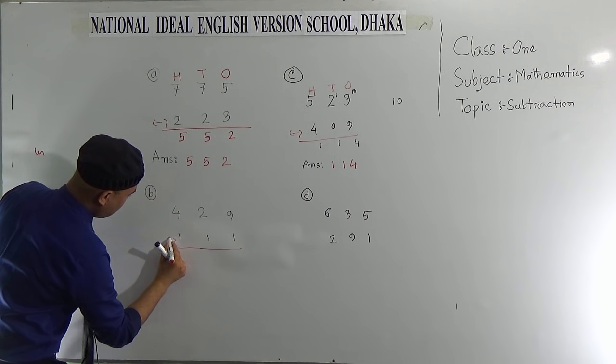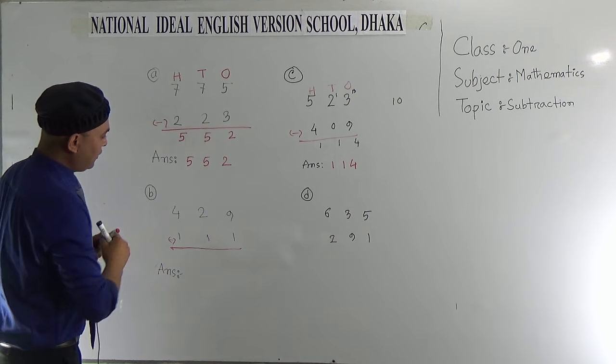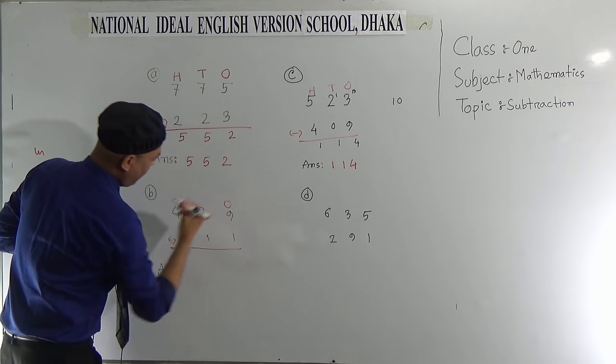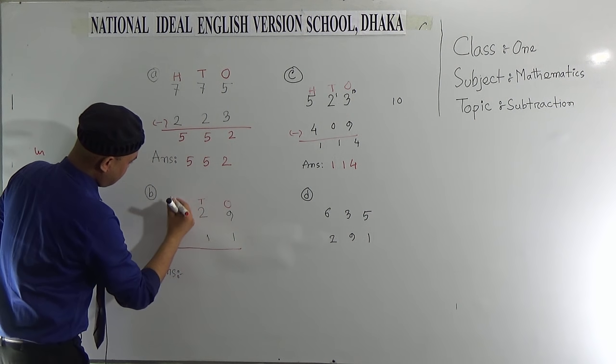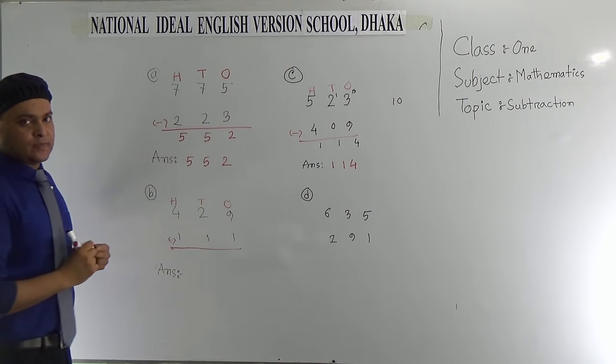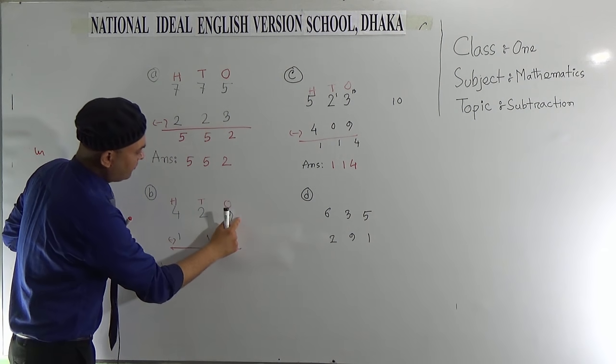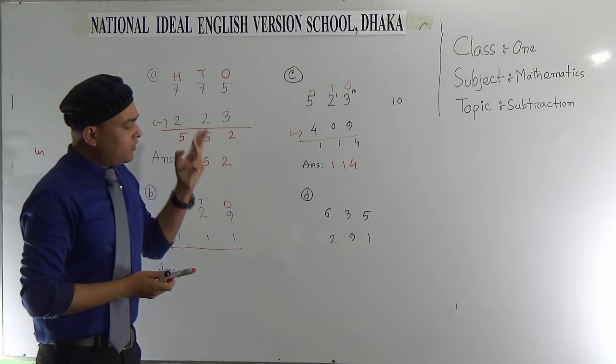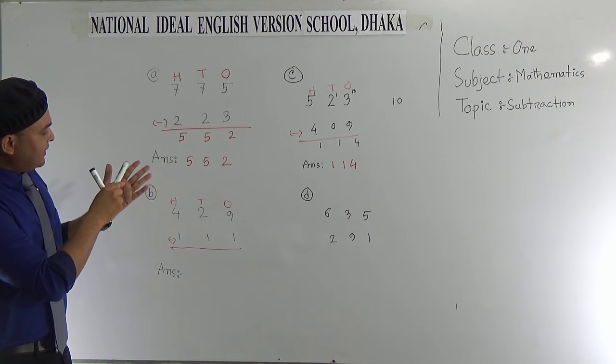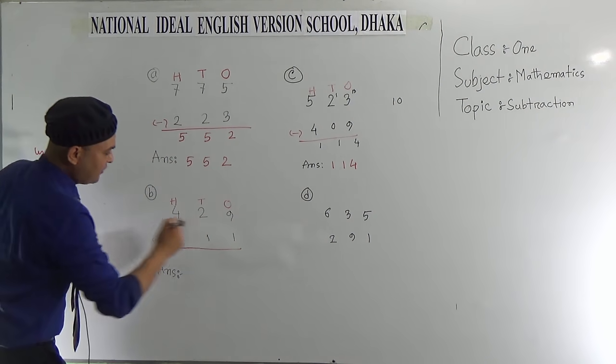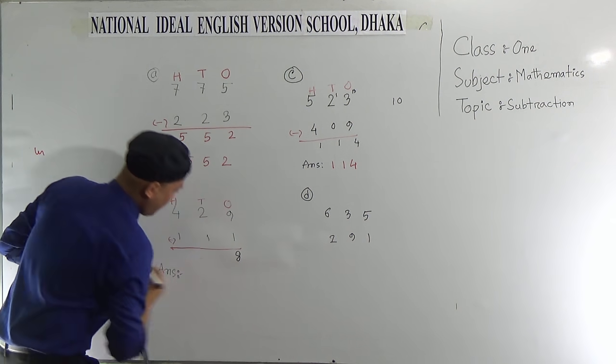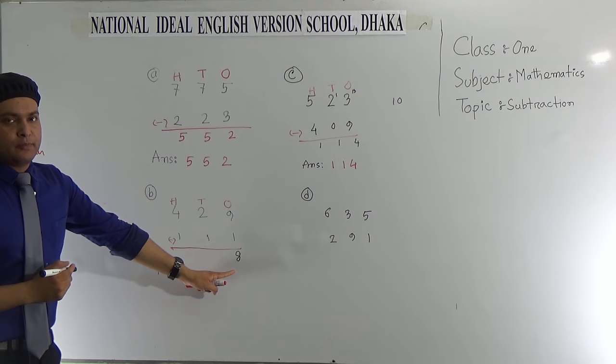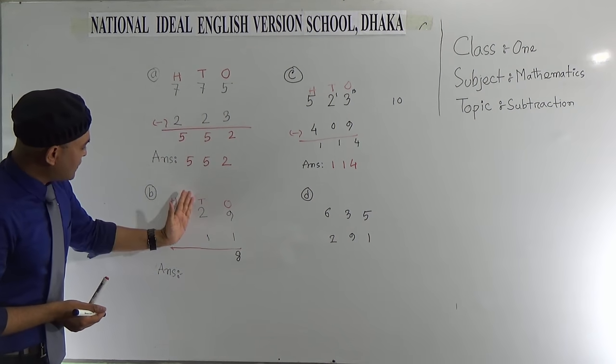Similarly we can draw a line and take the minus sign. First of all we put the place value. 9 is 1's, this is 10's, and this is 100's. Now subtract 1 from 9. That is 8, and 8 will go in 1's column.